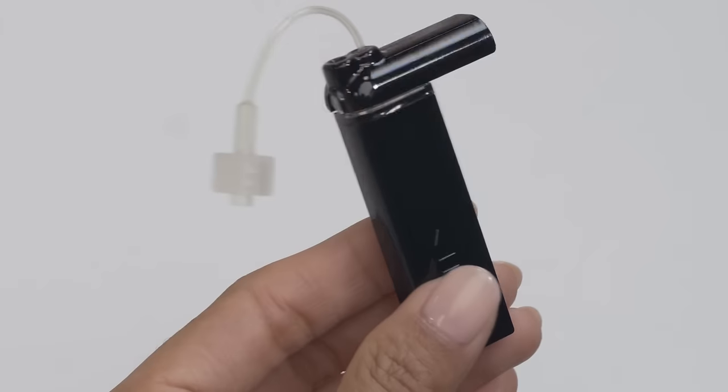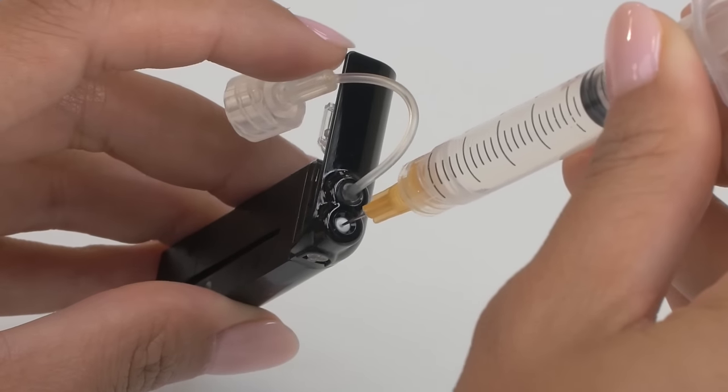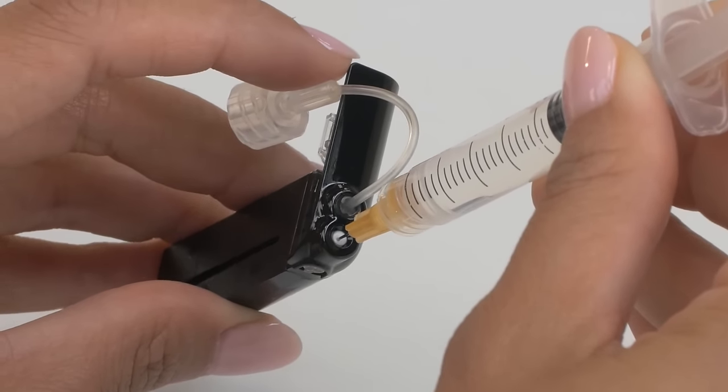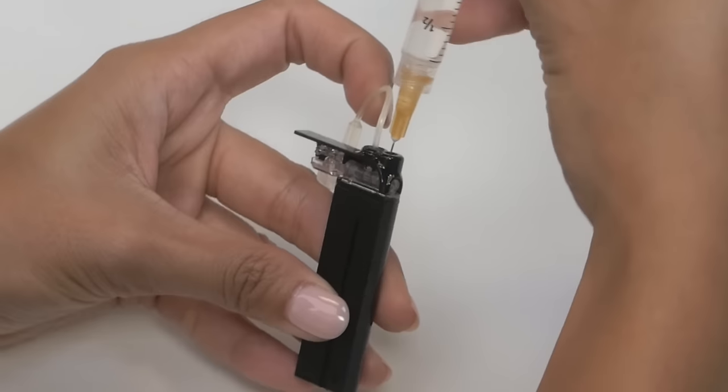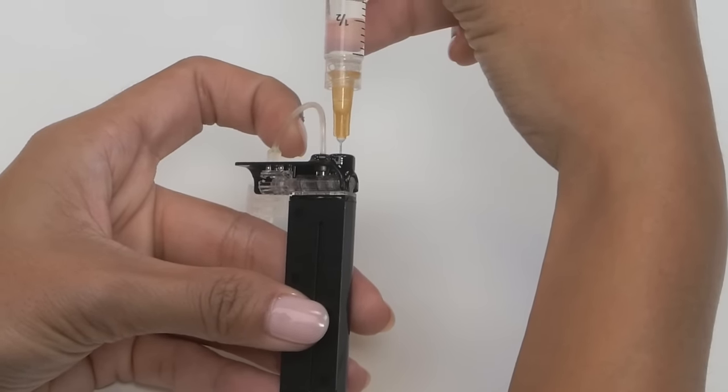Next, holding your cartridge upright, insert the needle into the white fill port on the top of the cartridge. It should stop about halfway, but occasionally will go all the way in. Either way is fine, but do not try to force it once you feel some resistance.